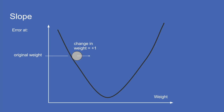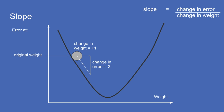The slope we're talking about is: when we make a change in a weight, the error will change a little bit. That relation of the change in weight to the change in error is the slope. Mathematically there are several ways to write this; we'll favor dE/dW — shorthand for 'the change in error when I change a weight,' or the change in the thing on top when I change the thing on the bottom.